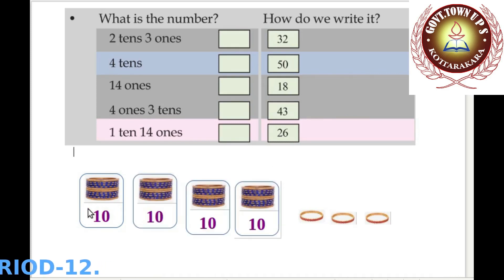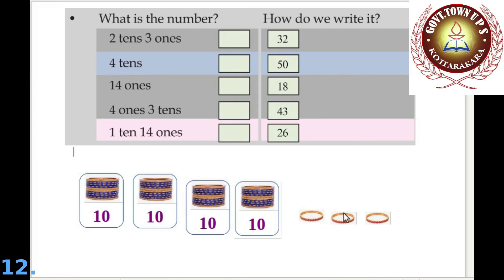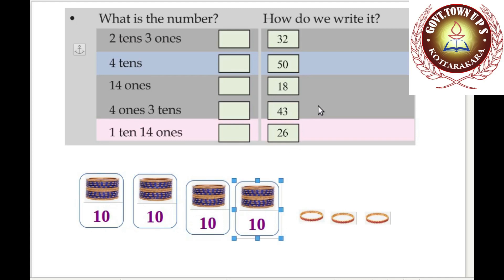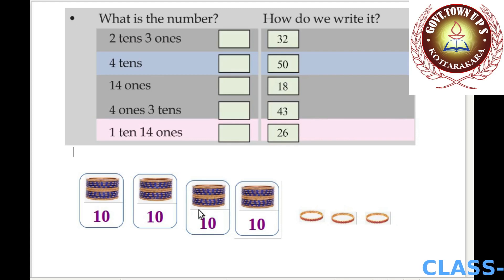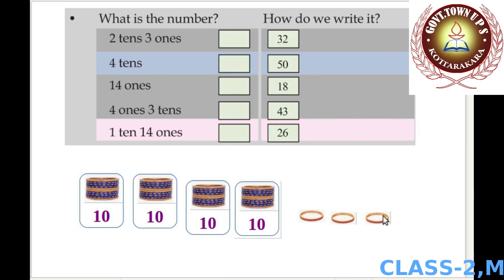Look here: 43. Count the tens: 10, 20, 30, 40, and the ones: 1, 2, 3. How many tens and ones in 43? Four tens and 3 ones. We can write 43 as 4 tens and 3 ones.